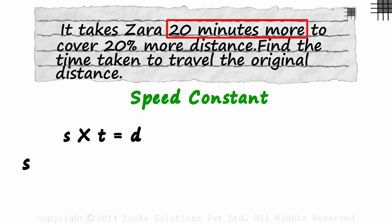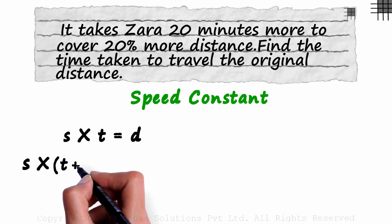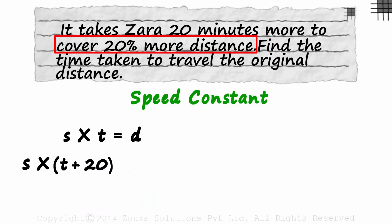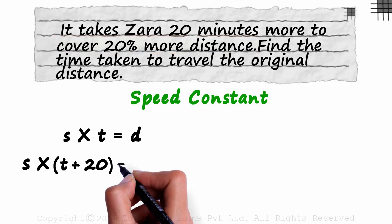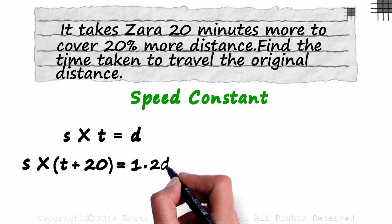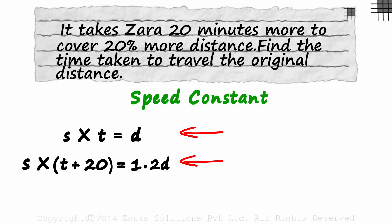The speed at which Zara travels remains constant, so the speed will remain S for the second case as well. She takes 20 minutes more than the original time. The time taken will be T plus 20. And she covers 20% more distance, so the distance will be 1.2D. So these are the two cases in the question. We have just simplified the question.